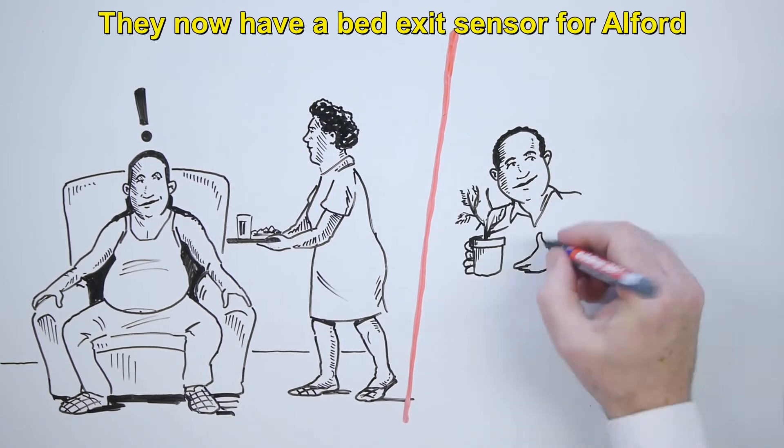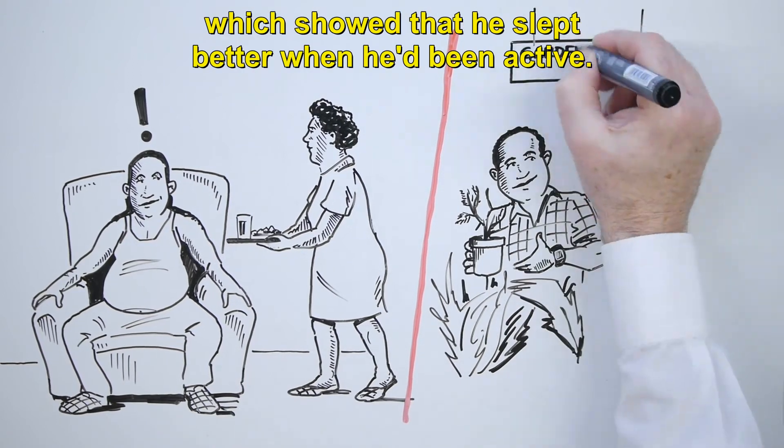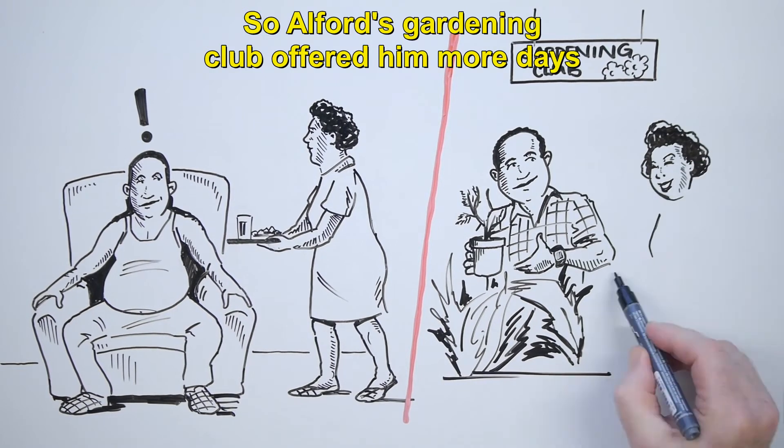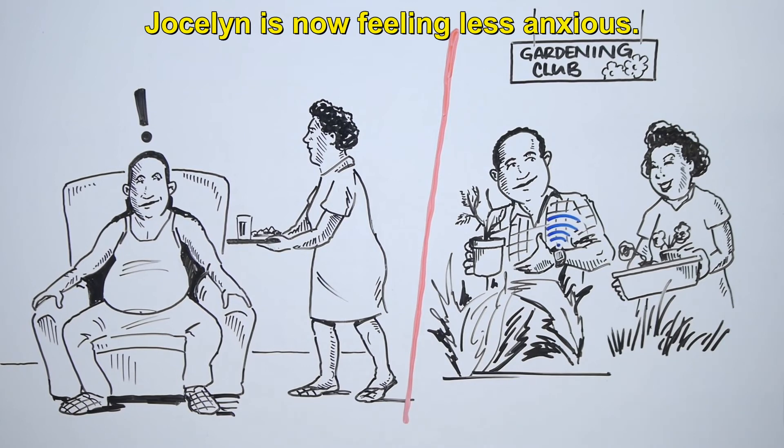They now have a bed exit sensor for Alfred and a lifestyle monitoring system which showed that he slept better when he'd been active. So Alfred's gardening club offered him more days, and he's waking less at night. Jocelyn is now feeling less anxious.